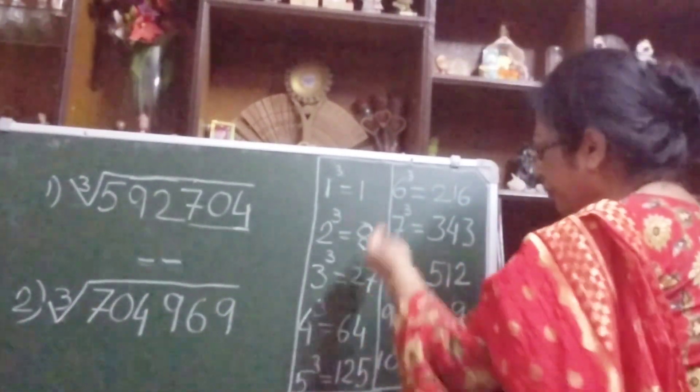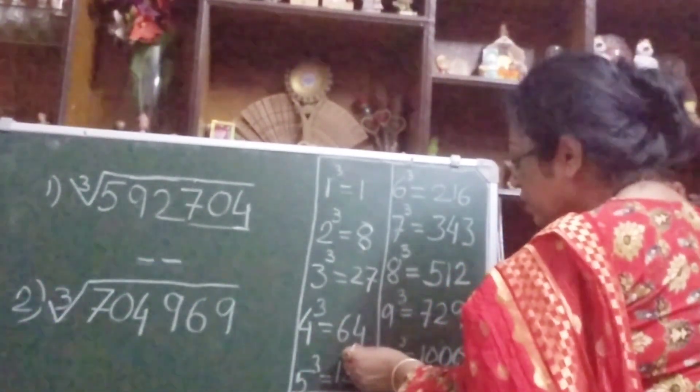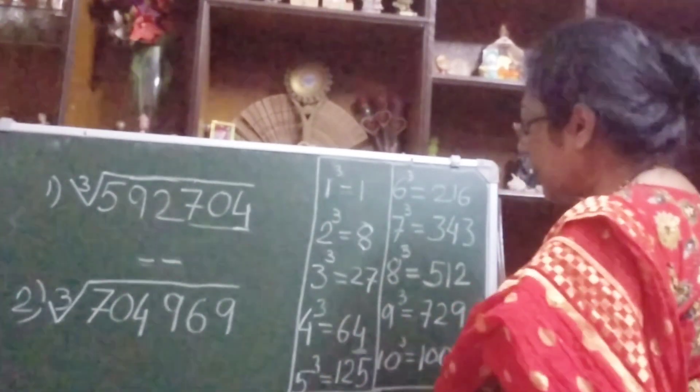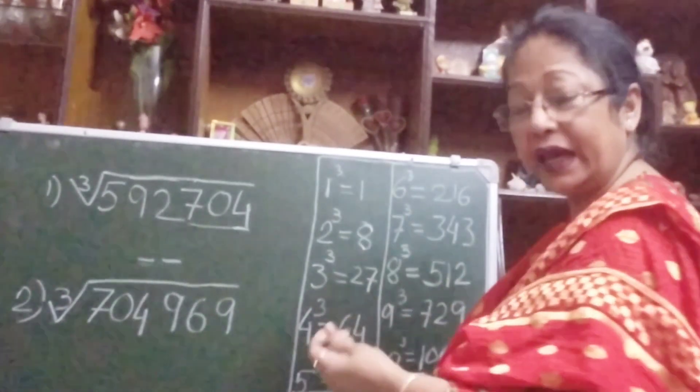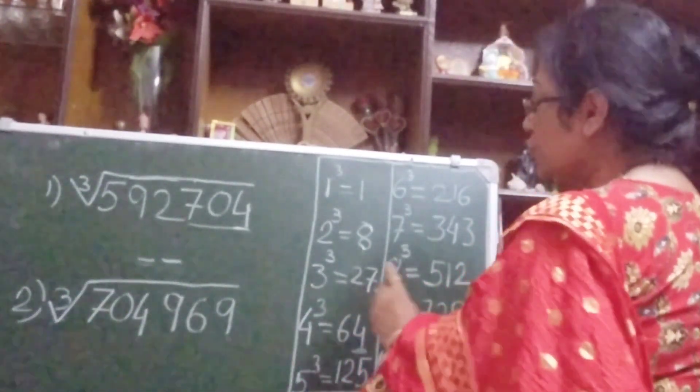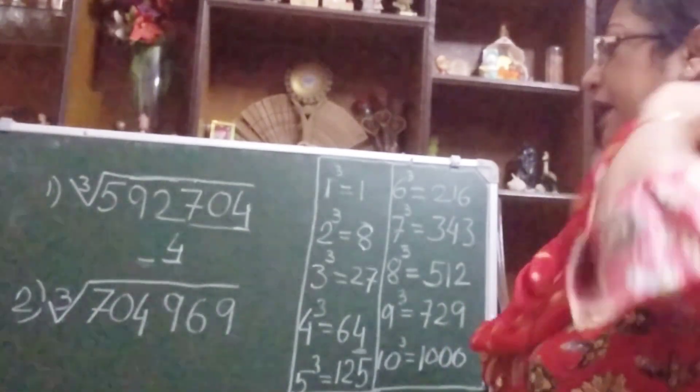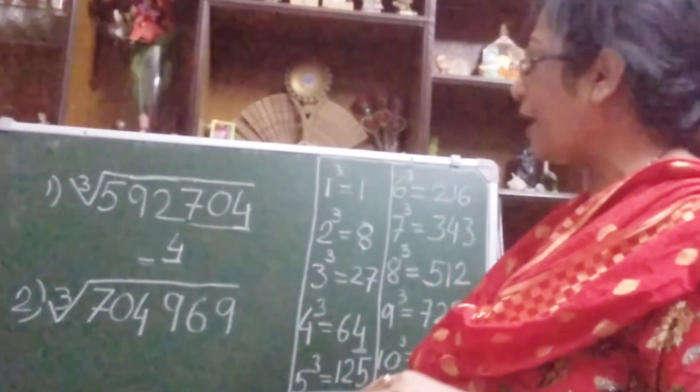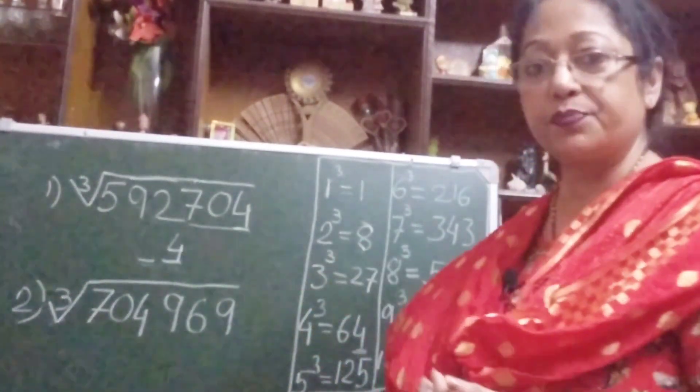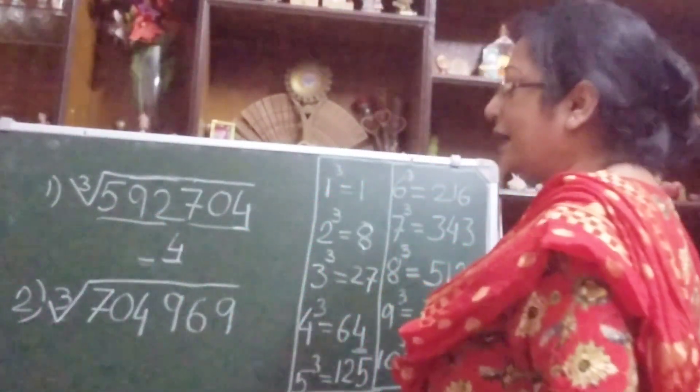So we will find out here, from here where is 4. You see 4 cube equals to 64, so we got that in the unit place 4 is here. From where we get this 64? 4 cube equals to 64. So you write in the unit place 4. So in your answer, the unit place digit has come.